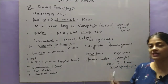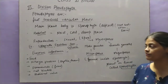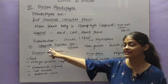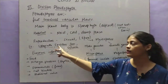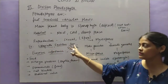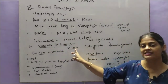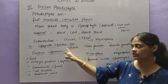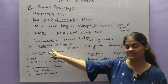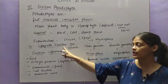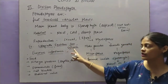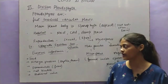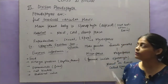We will study the detailed life cycle later. Examples of pteridophytes are Selaginella, Equisetum, fern, and Salvinia. I will show you pictures of all four: Selaginella, Equisetum, fern, and Salvinia.